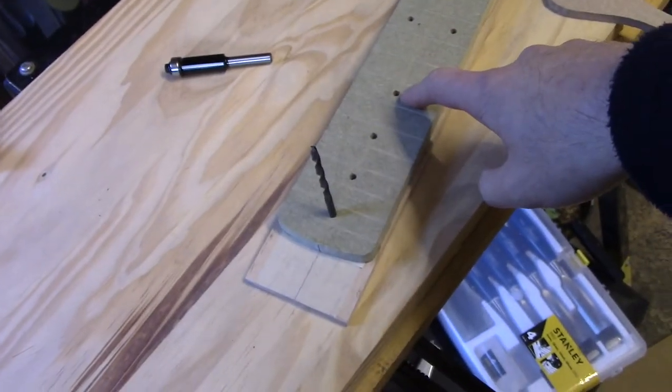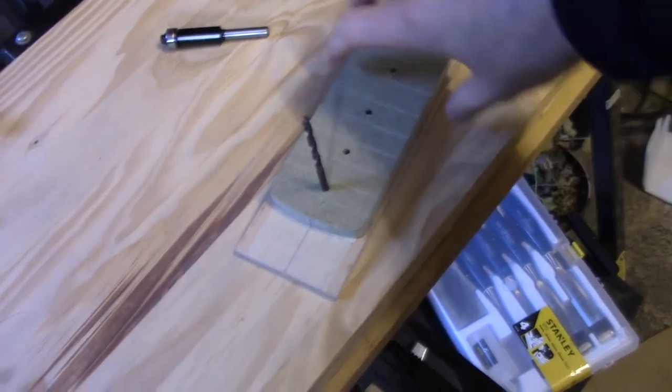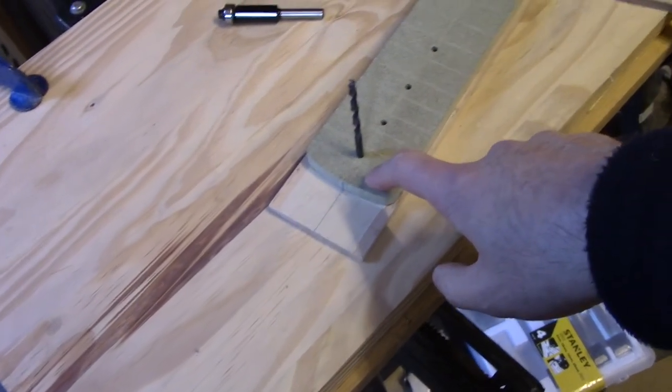The next thing to do is to trim the fretboard down to the template. Now, the really tricky bit, as I found out, was getting the fretboard perfectly centered on the template.